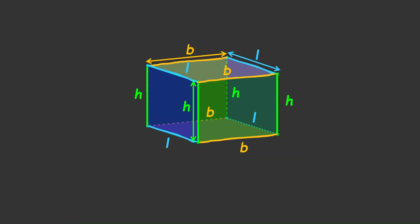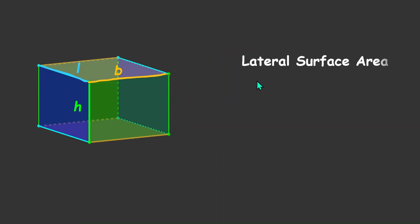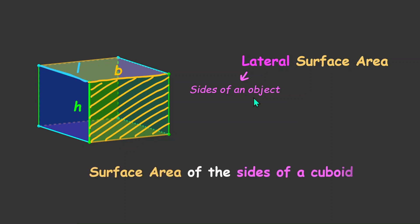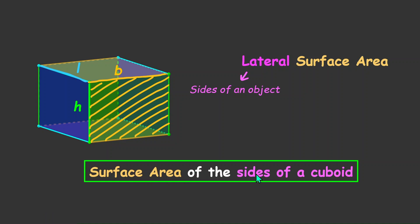Now let's try to find what lateral surface area really means. We'll take our cuboid aside and do a simple word breakdown. The word we are concerned with is 'lateral', which means the sides of an object — so we're not talking about the top or the bottom, just the sides. On top of that, we're concerned about the surface area. Here, 'surface' simply means the faces of the cuboid, which are six in total, and we're talking about the area of these faces. So lateral surface area is the surface area of the sides of a cuboid, not including the top or bottom faces.